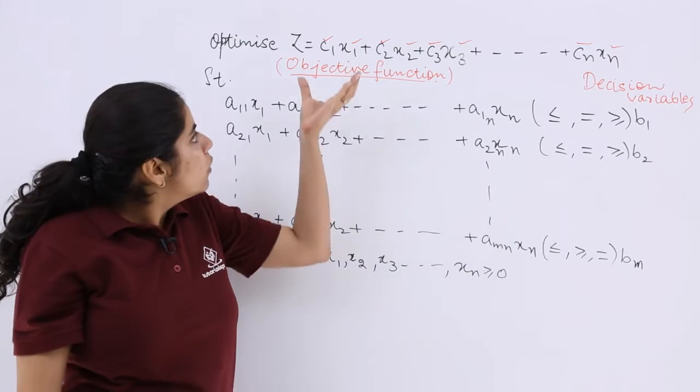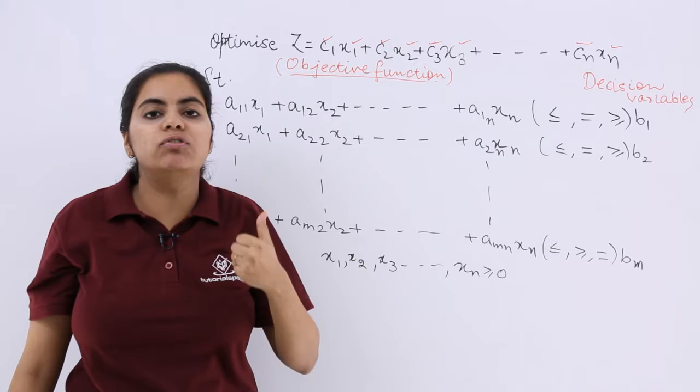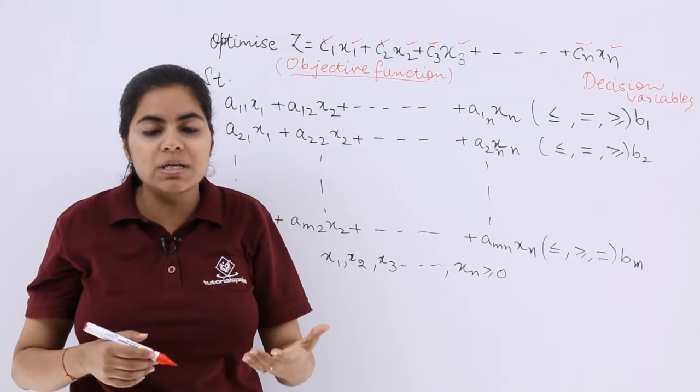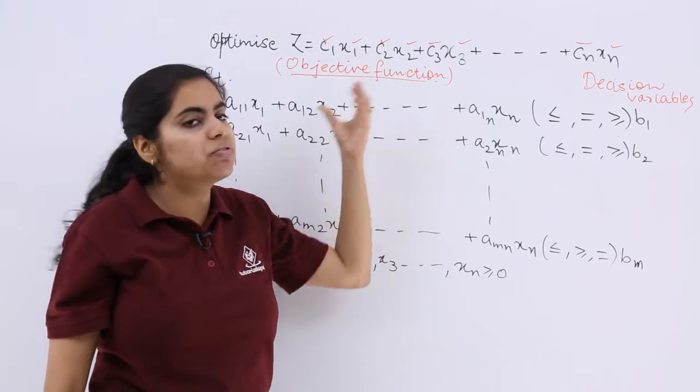Then what is this whole thing called? This whole thing, z which you have to maximize or minimize—that is, optimize—is called the objective function.